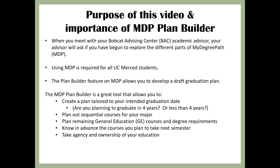The purpose of this video is to explain the importance of the MDP Plan Builder. When you meet with your Bobcat Advising Center academic advisor, your advisor will ask if you have begun to explore the different parts of My Degree Path, or MDP. Using MDP is required for all UC Merced students. The Plan Builder feature allows you to develop a draft graduation plan tailored to your intended graduation date — whether you plan to graduate in four years or less. You can plan sequential courses for your major, remaining general education (GE) courses, degree requirements, and know in advance the courses you plan to take next semester.